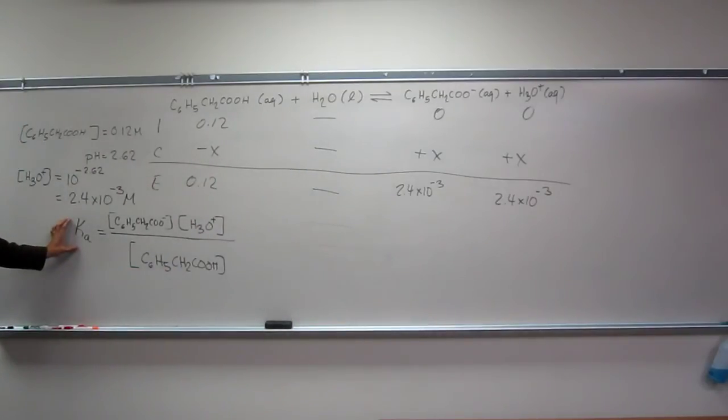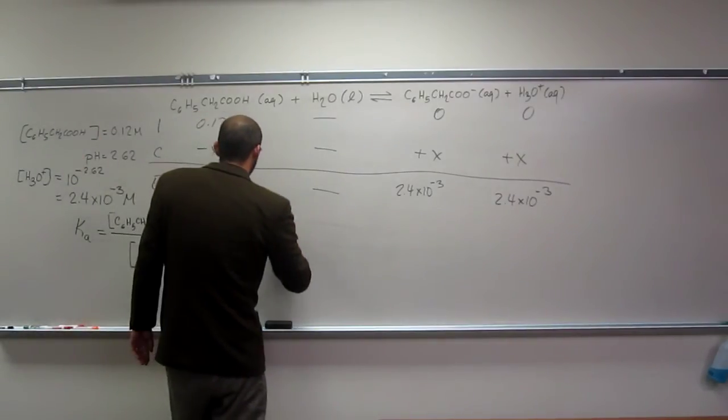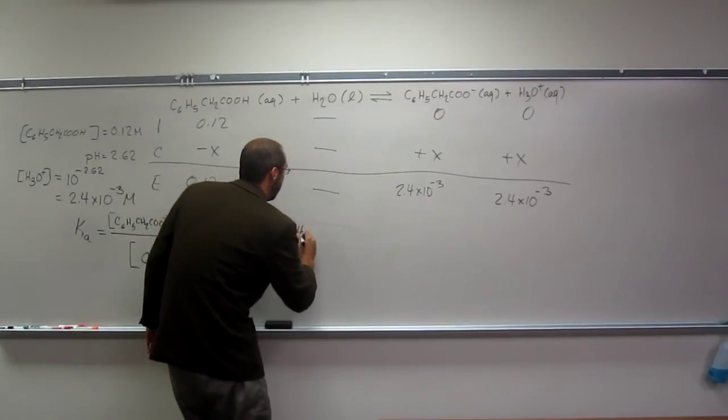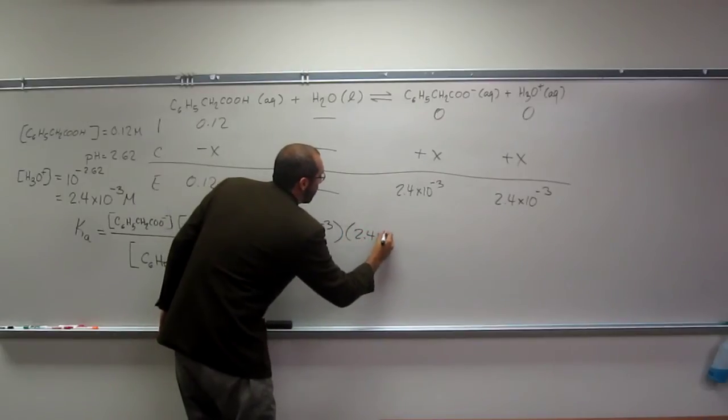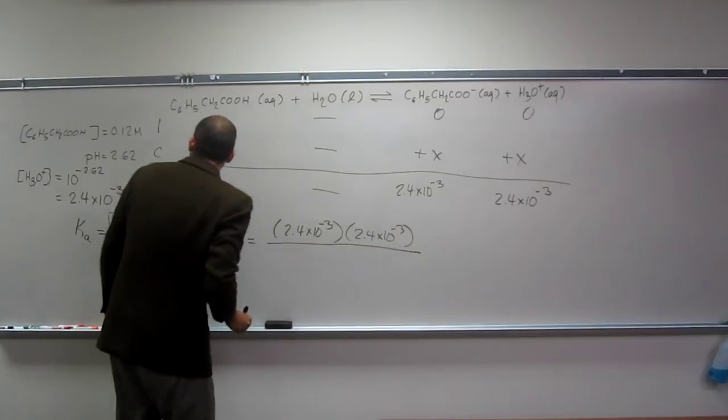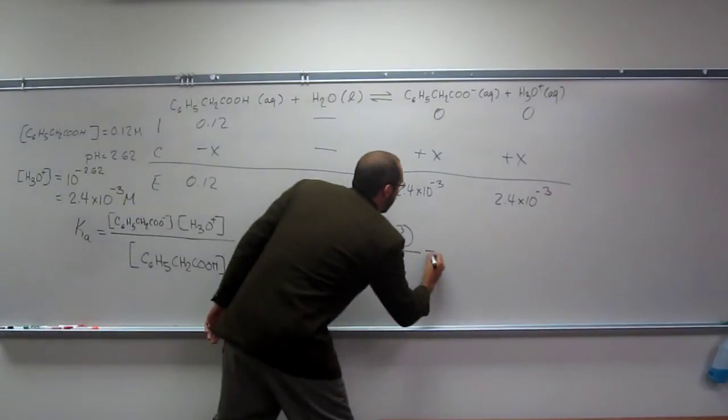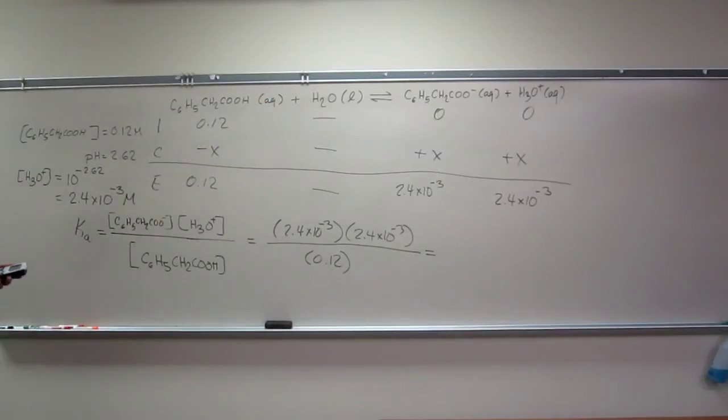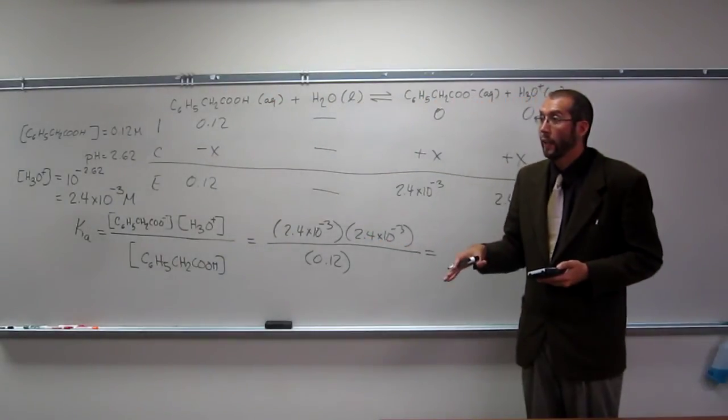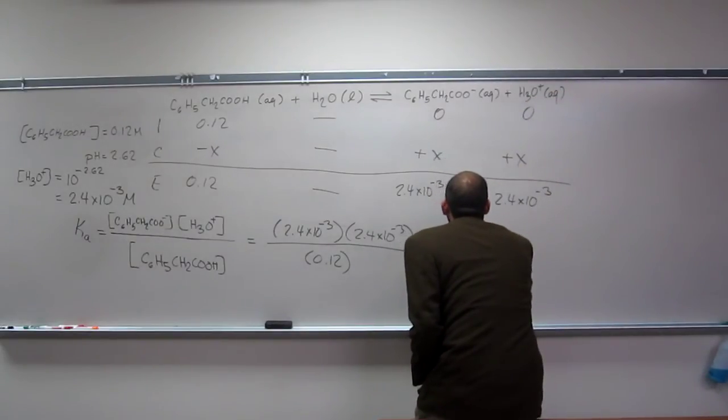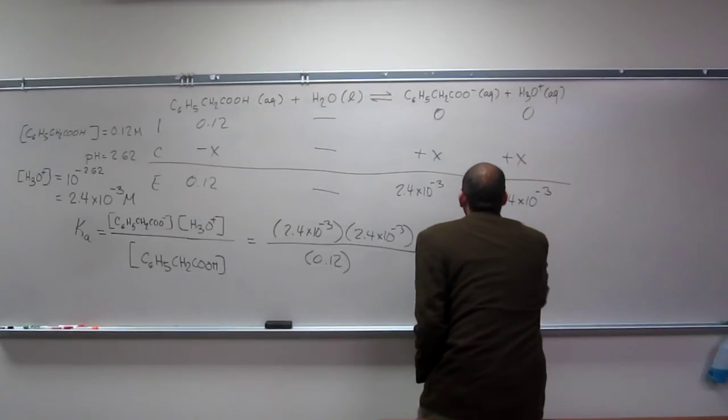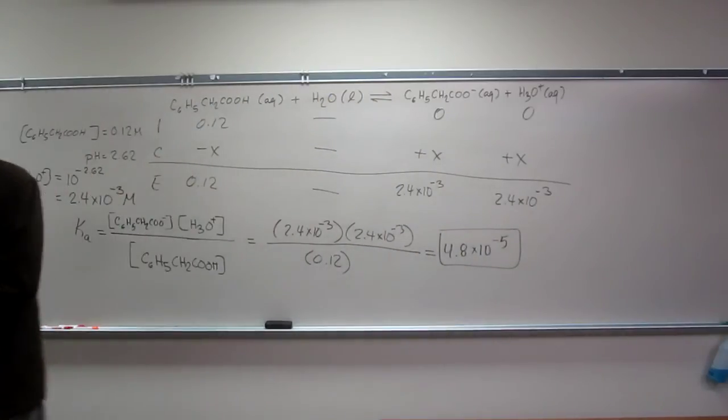Okay, so now, all we do is really plug and chug. It's going to be 2.4 times 10 to the negative 3, 2.4 times 10 to the negative 3, divided by, and notice I'm not putting my molars in there. And the Ka, as we would imagine, for a weak acid should be very small. So, I got 4.8 times 10 to the negative 5, that's the Ka for phenylacetic acid.